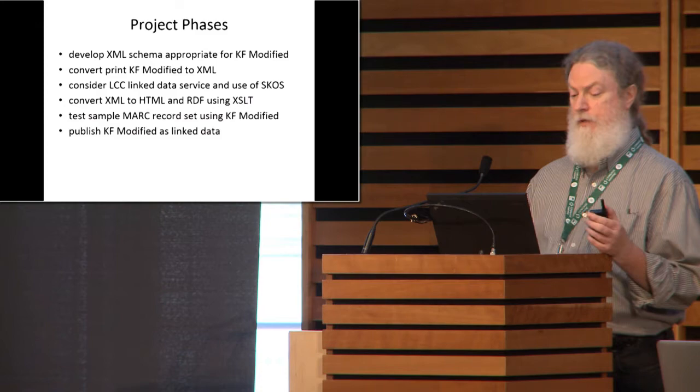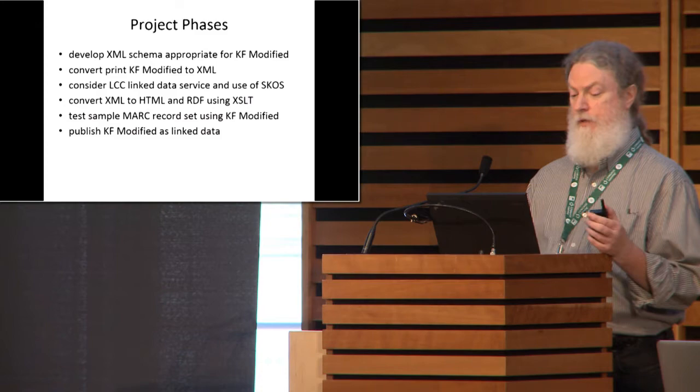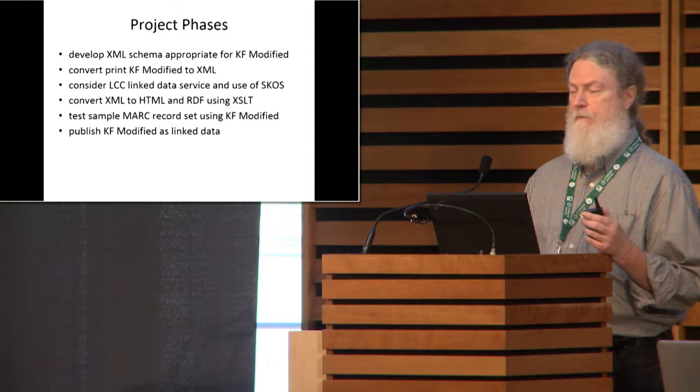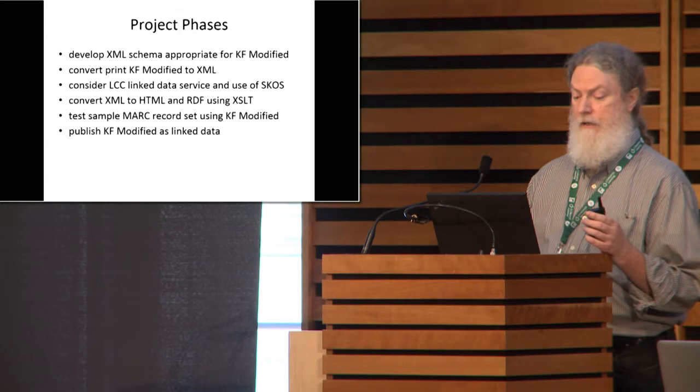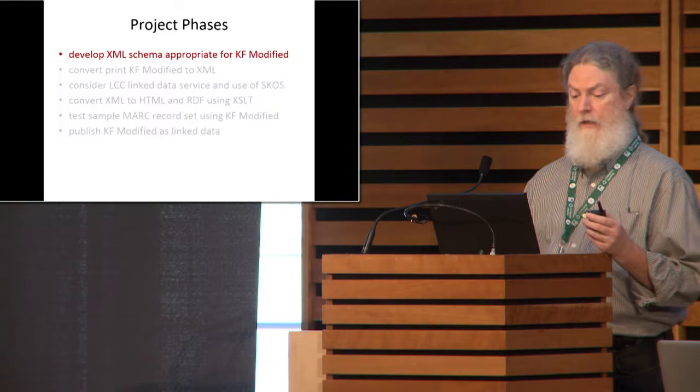We outlined the main project development phases as follows: develop an XML schema appropriate for KF Modified classification; convert the print version of KF Modified to XML; review and consider the Library of Congress classification linked data service and their use of SKOS; convert the XML version to HTML and RDF using XSLT; extract, convert, and reconcile a MARC record set using the linked data version of KF Modified; and finally, make the project publicly available.